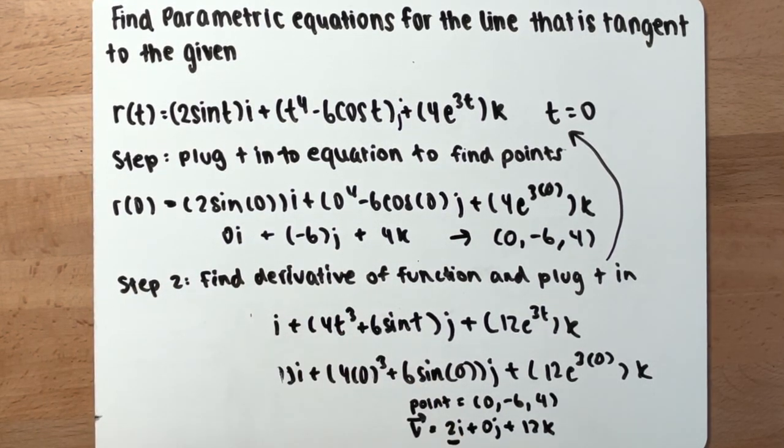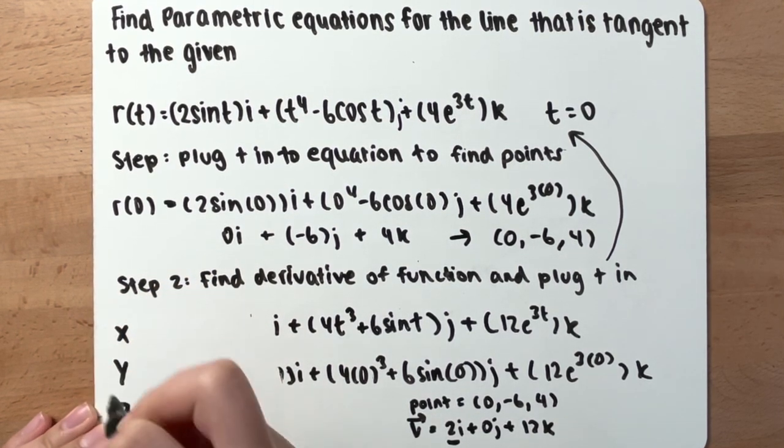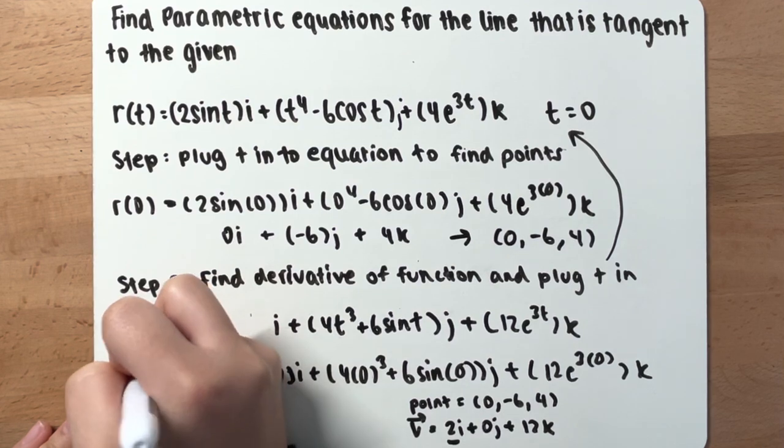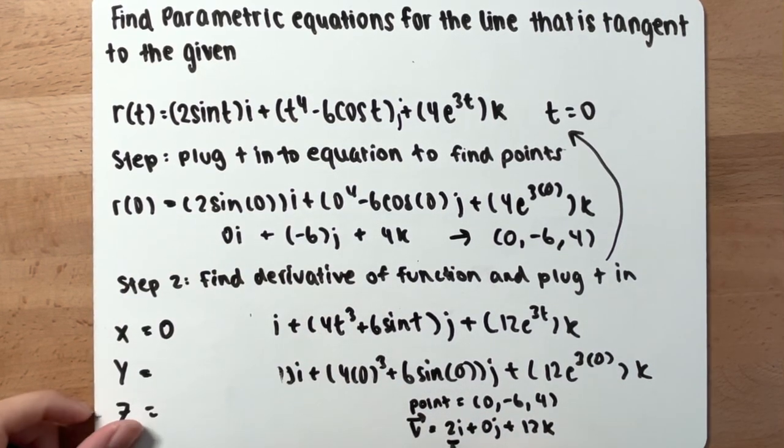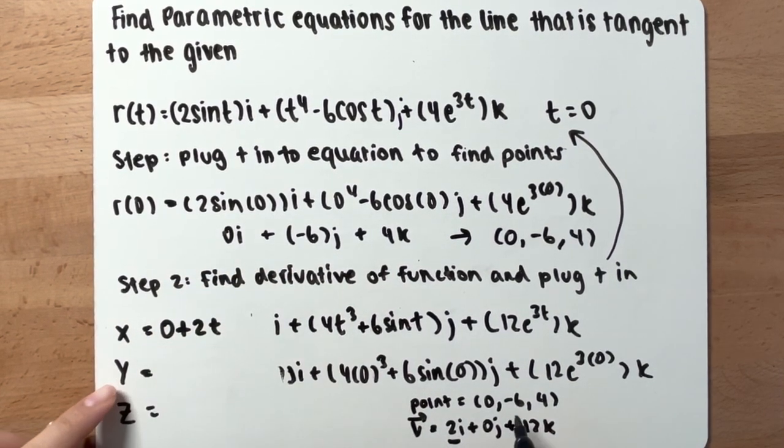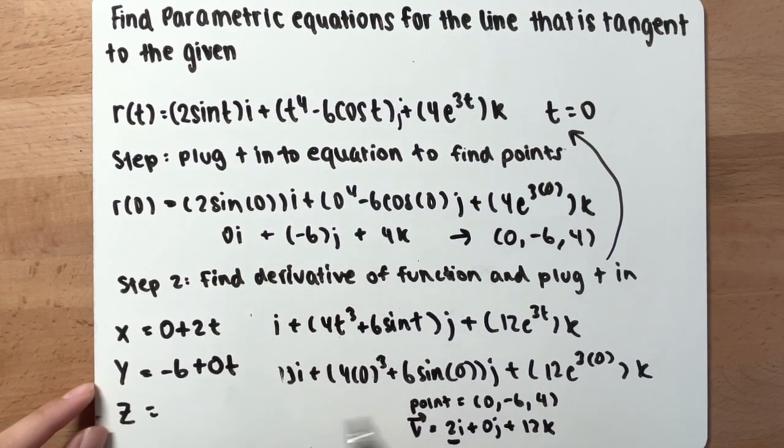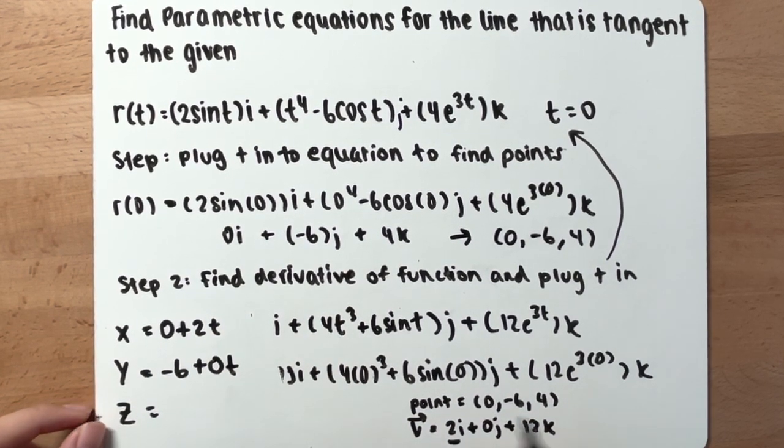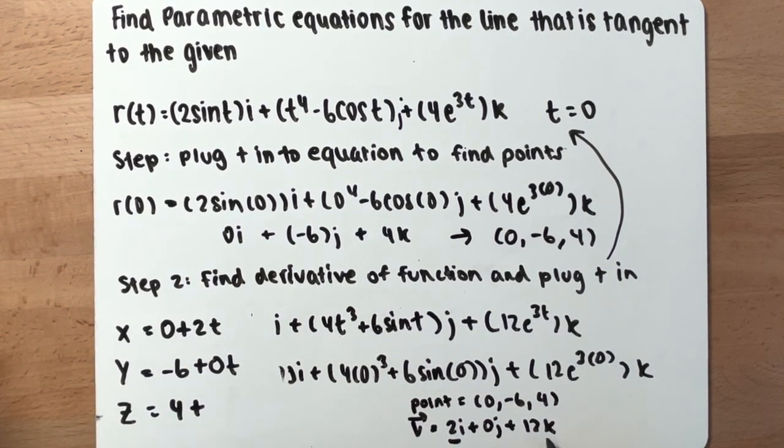Okay, so you have x, y, and z. x will be equal to 0 plus 2t. y will be equal to negative 6 plus 0t. z will be equal to 4 plus 12t.